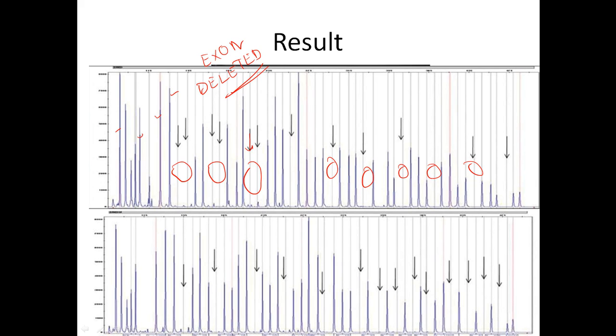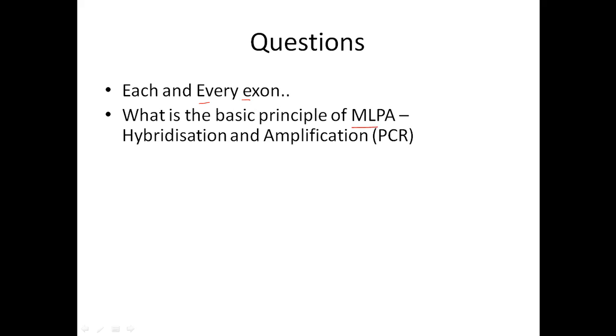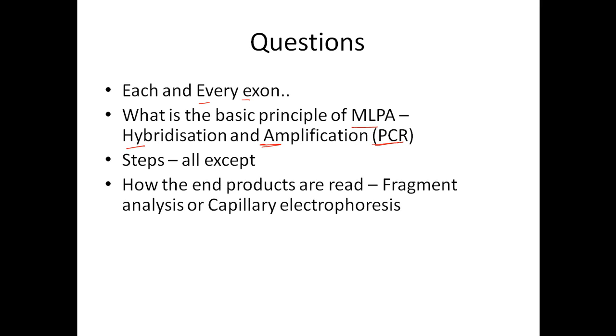So we will go to few questions. MLPA probes are targeted towards each and every exon, that's the first question. What is the basic principle of MLPA? It's hybridization and amplification technique, in other words PCR-based amplification. It's hybridization amplification, PCR-based technique. The steps you should know, the steps can be asked as an MCQ as what are the following are the steps of MLPA except. First is denaturation and hybridize with MLPA probes, then ligate it, then PCR amplify it, and send it to electrophoresis by fragment analysis, and then interpret it. How are the end products read? Two types: one is fragment analysis or capillary electrophoresis. Fifth one: it's used for large deletions and duplications, yes.